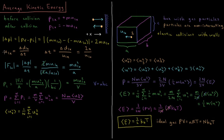We also know that velocity equals displacement divided by time. So the change in time equals displacement divided by speed. Between collisions, the particle travels all the way down the length A, hits the wall, and comes all the way back — a total distance of 2A — traveling at U₁ₓ in the X dimension.